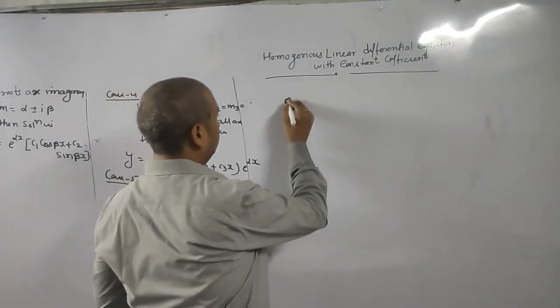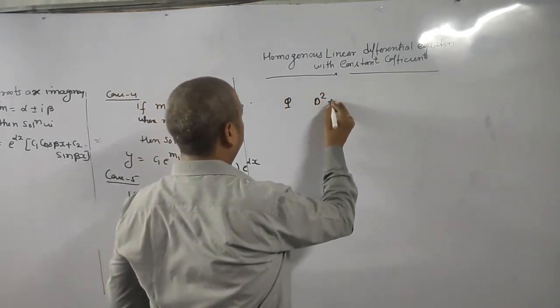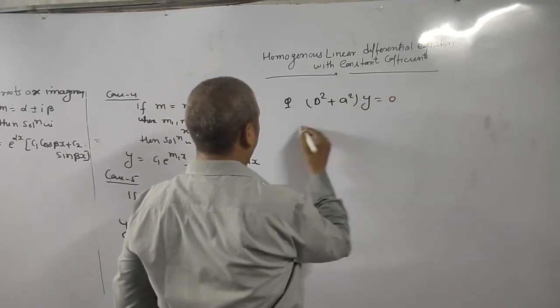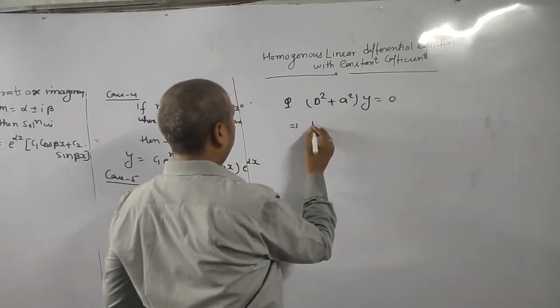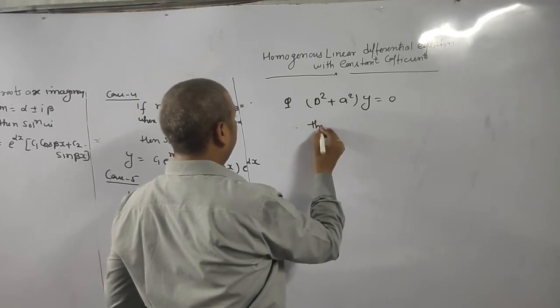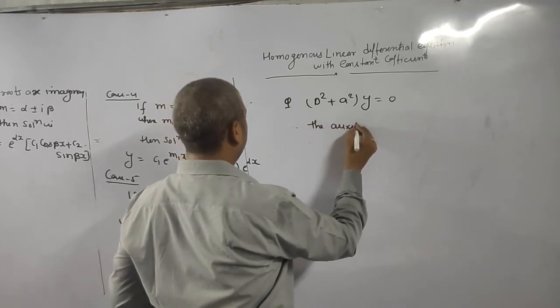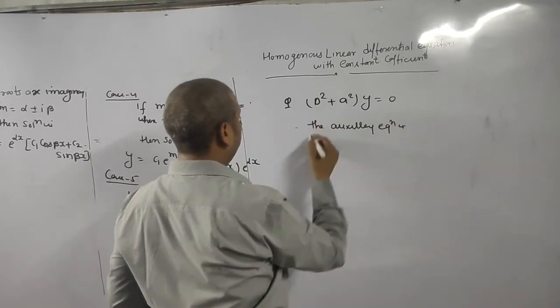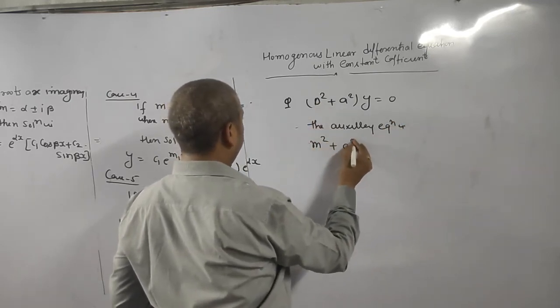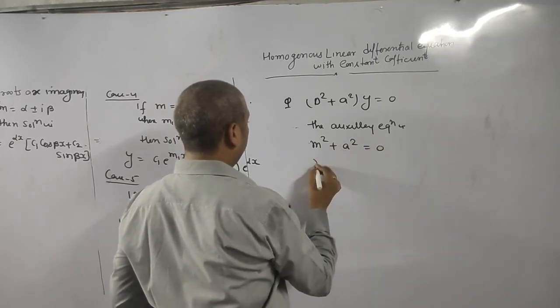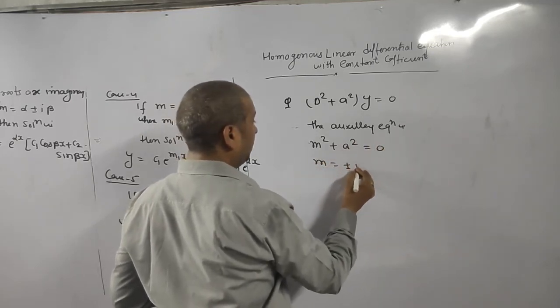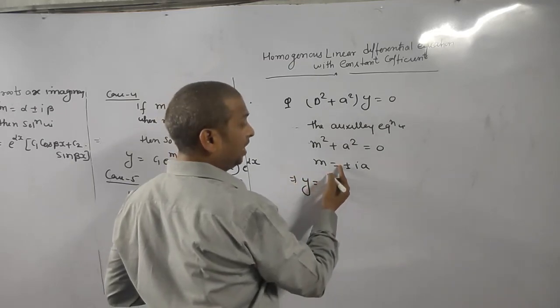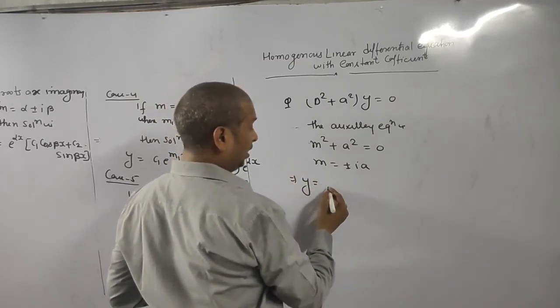Suppose question is d square plus a square of y is equal to 0. Then the auxiliary equation is m² plus a² is equal to 0. What is m value? Plus minus iota a. So this is imaginary. Alpha part 0, so e to the power 0x becomes 1.